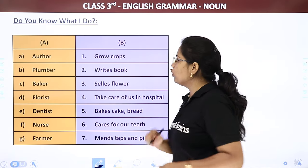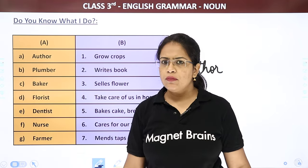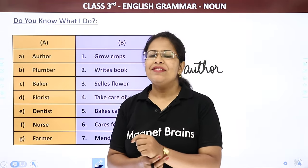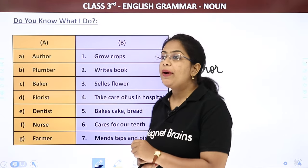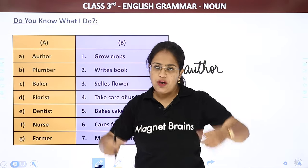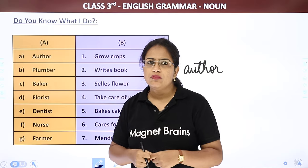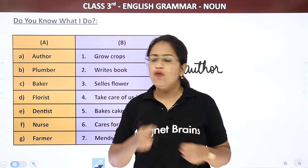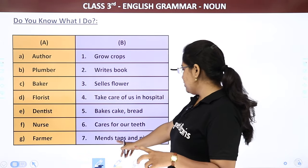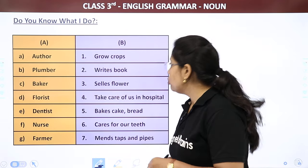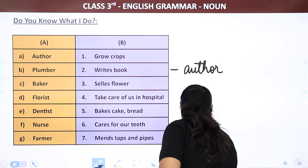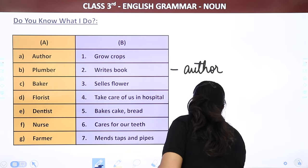The second one: Plumber. Aapke ghar pe plumber aata hai — kabhi dekha hai? Plumber kya karta hai? Humare ghar ke pipes thik karta hai. He has big tools like a spanner. He mends taps and pipes. So plumber — mends taps and pipes.